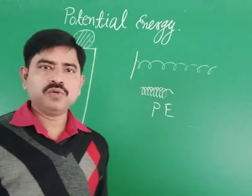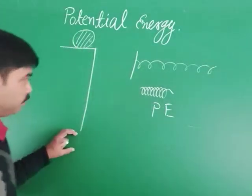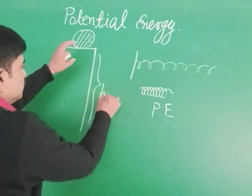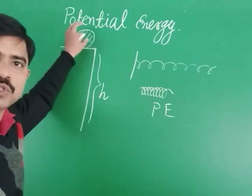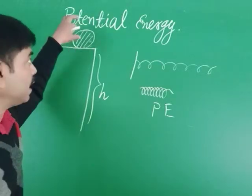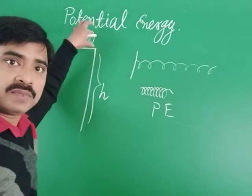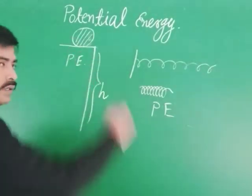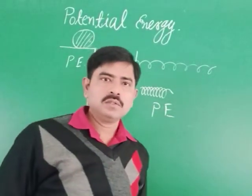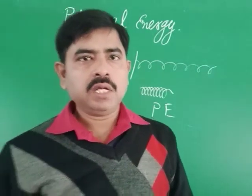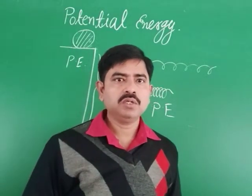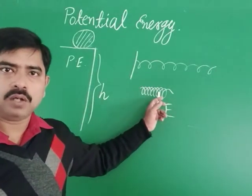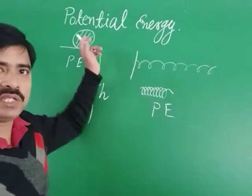Similarly, when you take any object to a certain height, due to its changing position, it possesses some energy — it is also called potential energy. So, potential energy is the energy possessed by a body due to changing its shape or due to changing its position.